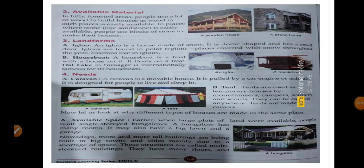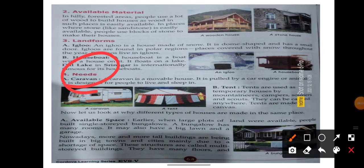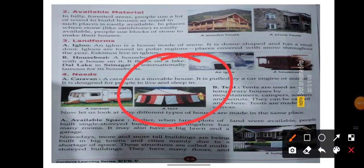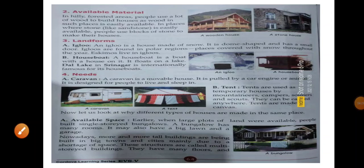Fourth — needs, yani ki according to need, us hisab se ghar banai jaate hain. Like caravan — wheel caravan — jo ki ek movable house hota hai, yani ki is ko aap ek jagah se doosri jagah move kar sakte hain. Agar hum apne gharon ko dekhen, it's impossible ke hum unko ek jagah se doosri jagah le ja saken. But wheel caravans ko hum ek jagah se doosri jagah move kar sakte hain. It's pulled by a car engine or animals — it is designed for people to live and sleep in.